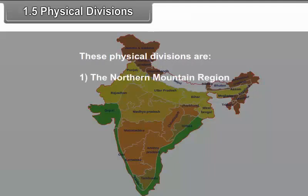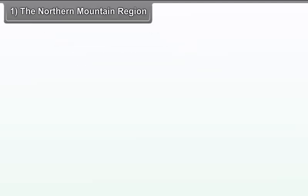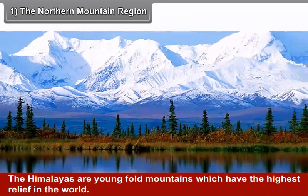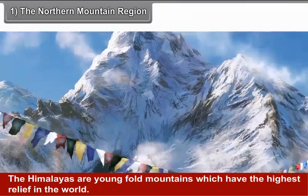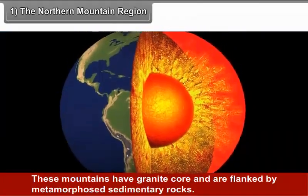These broad divisions are grossly different from each other and each has a distinctive personality with its own potentials and challenges. The five physical divisions are: 1. The Northern Mountain Region, 2. The Northern Plains, 3. The Peninsular Plateau, 4. The Coastal Plains, 5. The Islands.